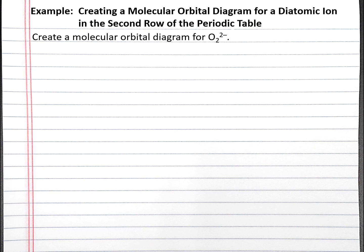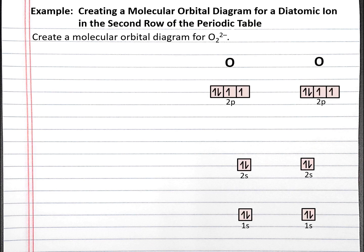We can start with the orbital diagrams for the two oxygen atoms. The electron configuration of oxygen is 1s2, 2s2, 2p4, so our orbital diagrams just need the 1s, 2s, and 2p subshells.